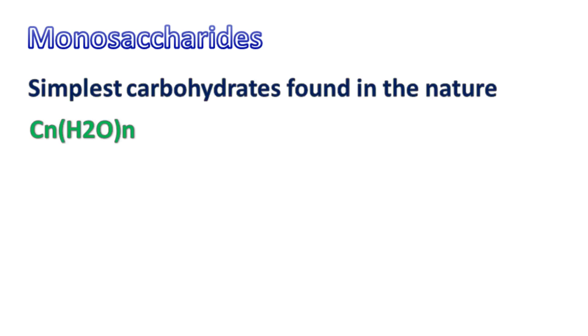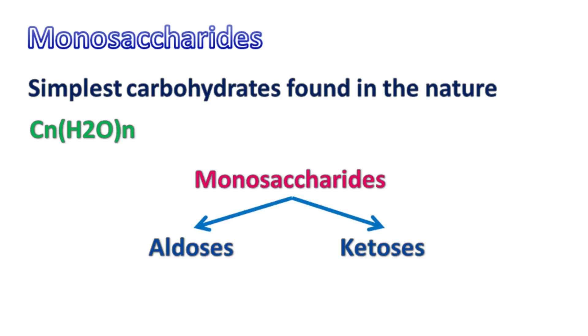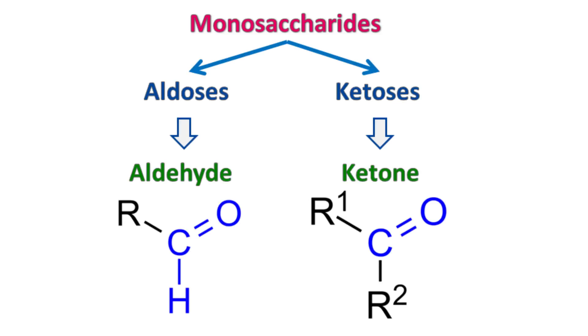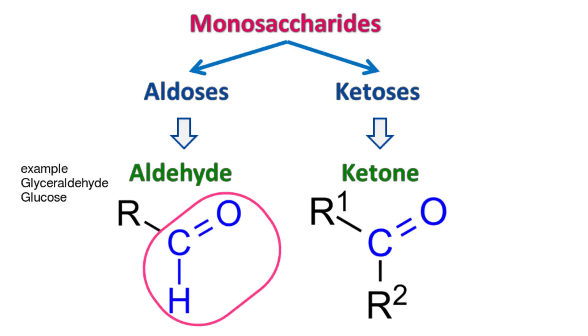Let's talk about monosaccharides. The word mono means one, and these are the simplest type of carbohydrates found in nature. They have a general chemical formula C(N)H₂O(N). Monosaccharides are further classified into aldoses and ketoses. Aldose monosaccharides are the ones that have aldehyde as a functional group. Examples of aldoses include glyceraldehyde and glucose.